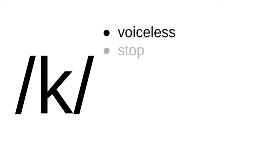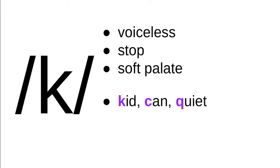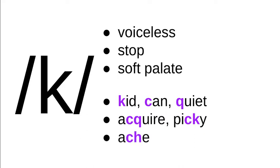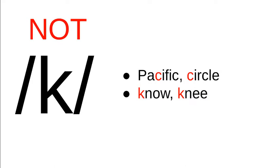The first sound is represented with the lowercase k and is the K sound. This sound is voiceless, it is a stop, and it's made at the soft palate. English uses K as in 'kid,' C as in 'can,' Q as in 'quick,' CQ as in 'acquire,' CK as in 'picky,' and sometimes CH as in 'ache' or 'character.' The letter C also represents the S sound, as in 'Pacific' and 'circle,' and we do have silent K's, as in 'know' and 'knee.'